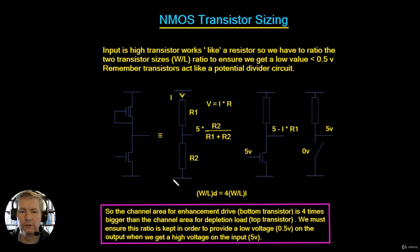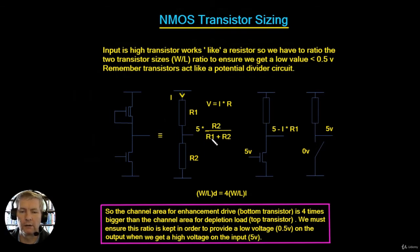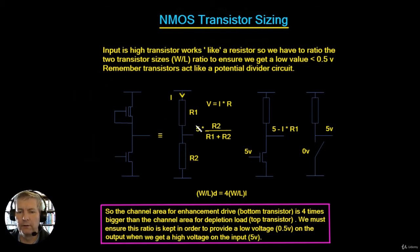The overall voltage up at the supply rail is 5 volts. So it's going to be the ratio of the supply rail voltage times R2 divided by R1 plus R2. This is going to be defined so that we can get a value of 0.5 volts. We pick the values of resistors R1 and R2 to give us the value of 0.5 volts for this equation.